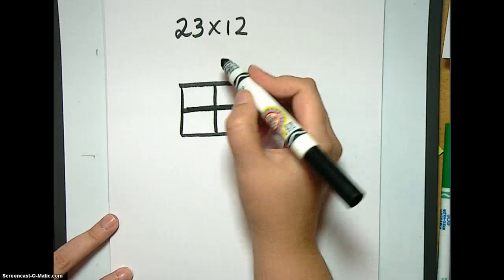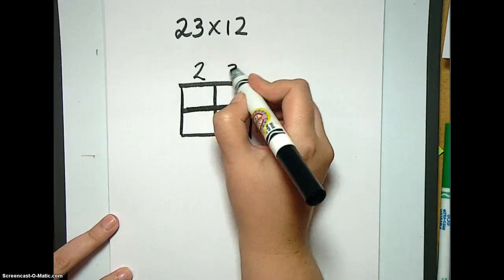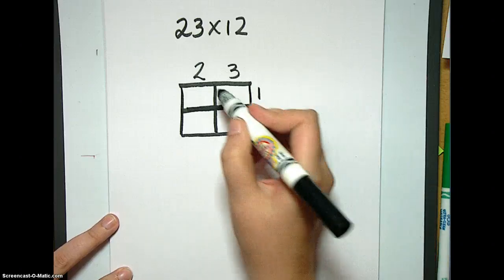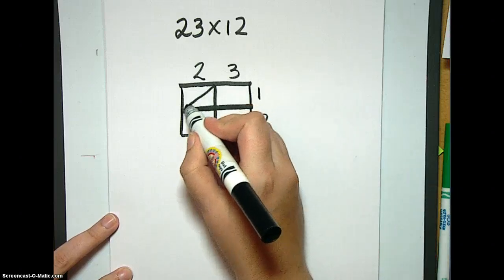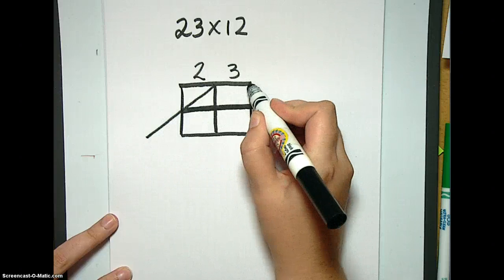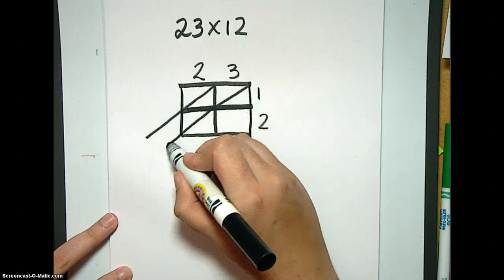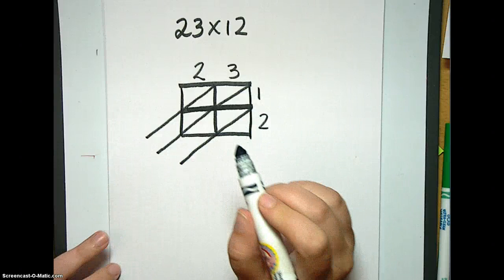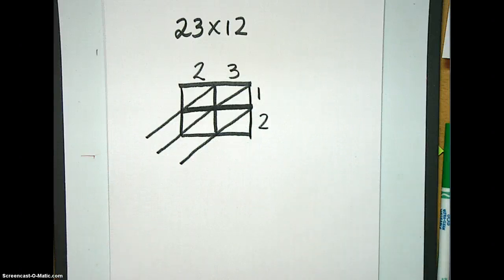So right here, 23 and 12. I'm going to go ahead and add my lines, my little diagonal lines. I carry mine all the way out so that I have a nice, neat place to put my answer. Some people don't like the way that looks, and that's okay. You don't have to carry your lines all the way out here.